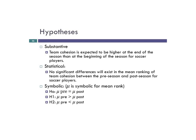The substantive hypothesis is that team cohesion is expected to be higher at the end of the season than at the beginning of the season. The statistical hypothesis is that no significant difference will exist in the mean rankings of team cohesion between pre- and post-season. You can see we still have statistical jargon — 'significant' and 'mean ranking' — and we're still going to use mean ranking just like we did for the Mann-Whitney U. Our symbolics use mu, consistent with all t-tests.